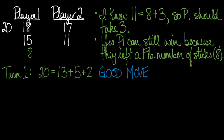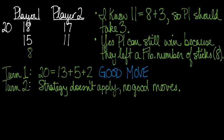Well, that's what player one did. So that's a good move. For turn two, the number 18 needs to be expressed. Well, actually, when I think about it, the strategy doesn't really apply. Because 18 is really 13+5 and player two can't take five sticks.